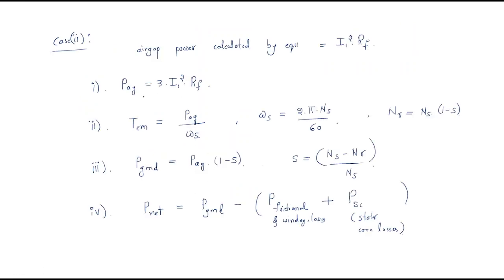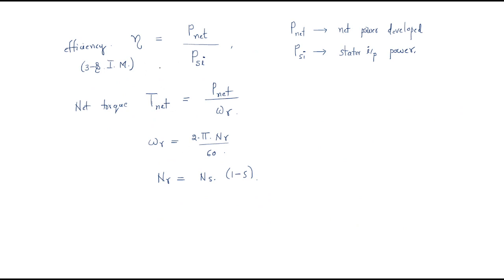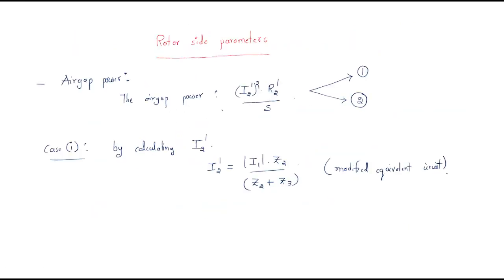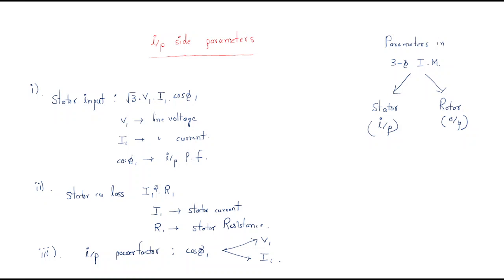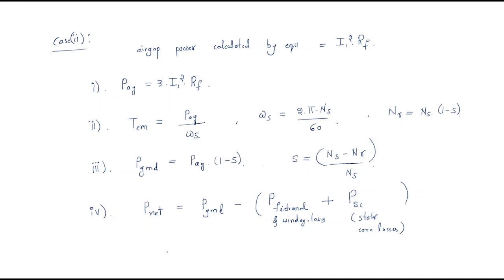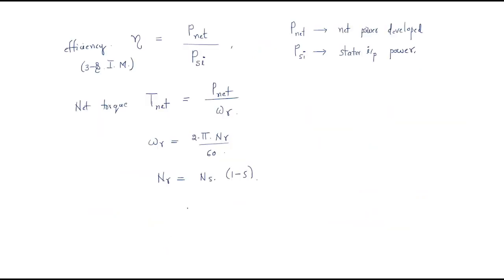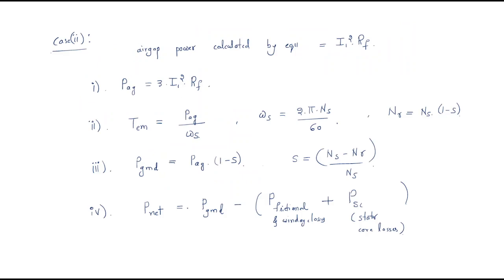So these are the rotor parameters: air gap power, electromagnetic torque, gross mechanical power developed, net power, efficiency, net torque, and rotor speed. The stator side parameters are: stator input, stator copper loss, and input power factor — along with the rotor current I2-dash. I hope all of you understand this session. Thank you.